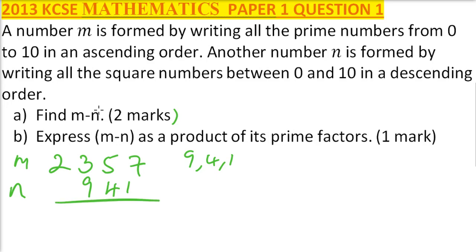When you subtract, you get this is 6, you get this is 5 minus 4 is 1, and then we have 13 minus 9 is 4, then we have 1. So that is the number that you get when you subtract n from m.